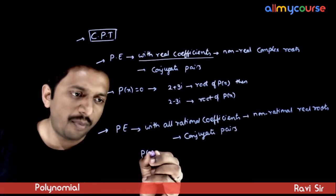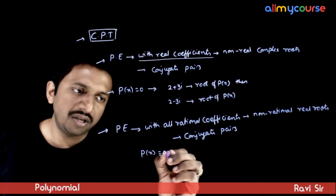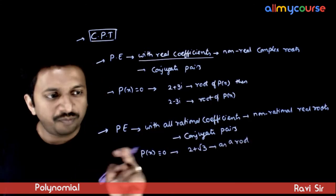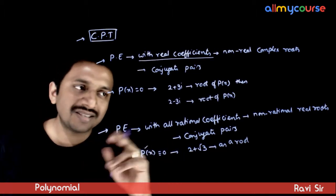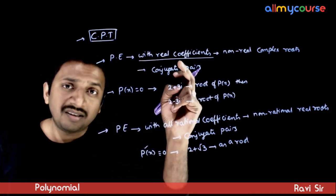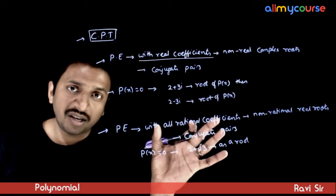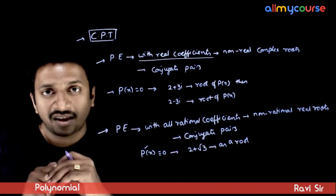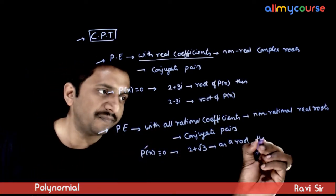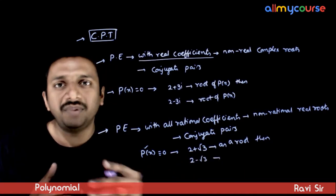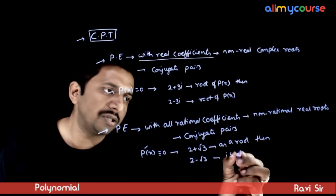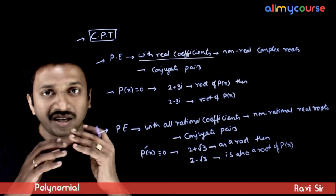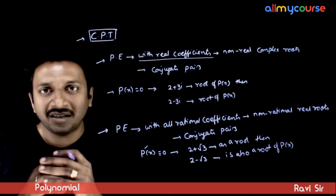For example, if the polynomial p(x) = 0 has 2 + √3 as a root, and all the coefficients of p(x) are rational, then its conjugate 2 - √3 will automatically also be a root of p(x). So if the coefficients are all rational, irrational roots always occur in conjugate pairs.